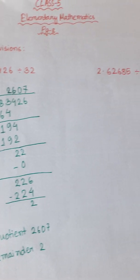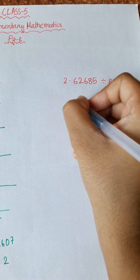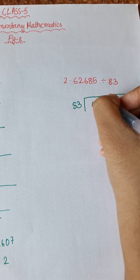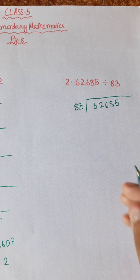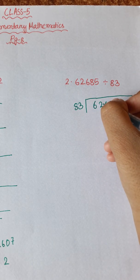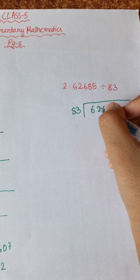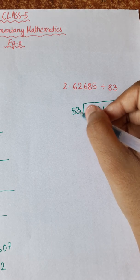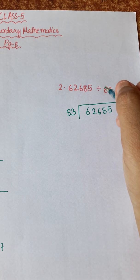Next math problem — number 2: 62685 divided by 83. So the first thing I need to carefully check is 83. For 62685, I need to check whether 83 can divide into 62 — it cannot. So I take 626.